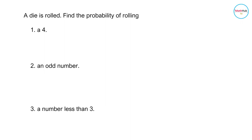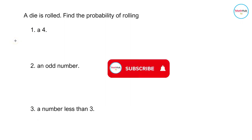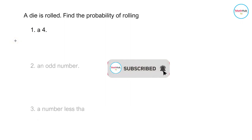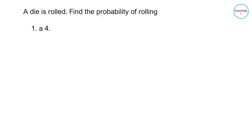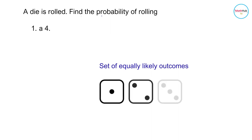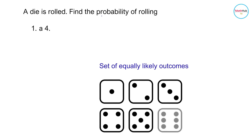Consider rolling a die. Find the probability of rolling a 4, rolling an odd number, and rolling a number less than 3. To solve this, let us first determine the set of equally likely outcomes in rolling a die. The set of equally likely outcomes is a set containing 1, 2, 3, 4, 5, and 6.